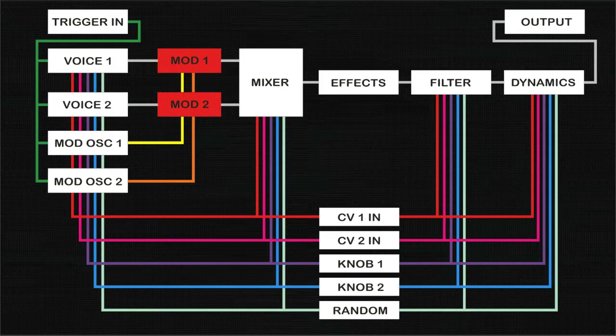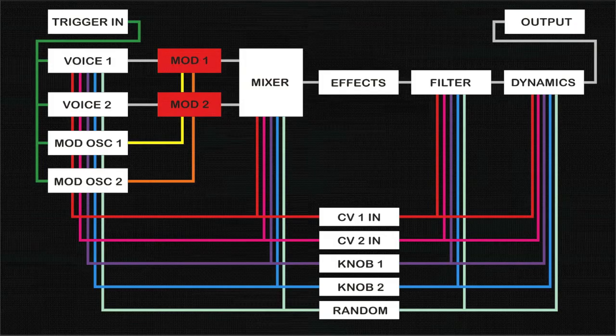More complex routings include the ability to process a single voice using both Mod 1 and Mod 2 in series. Mod 1 and Mod 2 functions also have their own independent gain settings for adjusting the level of each voice.